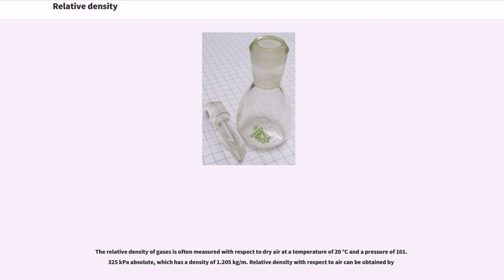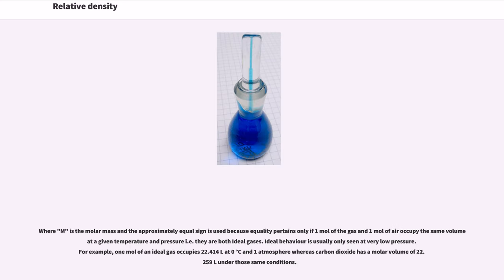The relative density of gases is often measured with respect to dry air at a temperature of 20°C and a pressure of 101.325 kilopascals absolute, which has a density of 1.205 kg/m³. Relative density with respect to air can be obtained using the molar mass, where the approximately equal sign is used because the equality pertains only if one mole of the gas and one mole of air occupy the same volume — that is, they are both ideal gases. Ideal behavior is usually only seen at very low pressure. For example, one mole of an ideal gas occupies 22.414 liters at 0°C and one atmosphere, whereas carbon dioxide has a molar volume of 22.259 liters under those same conditions.